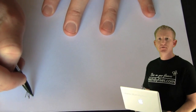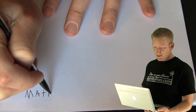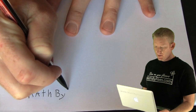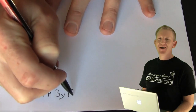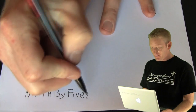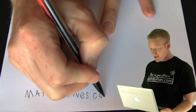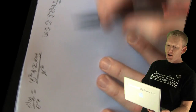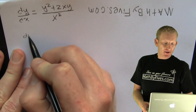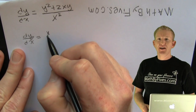Two observers notice someone writing on a board. 'What is this guy writing? Is he doing math upside down? Math By Fives — I love this show. Is he doing differential equations?' 'Yeah, it looks like he's trying to do homogeneous differential equations.'